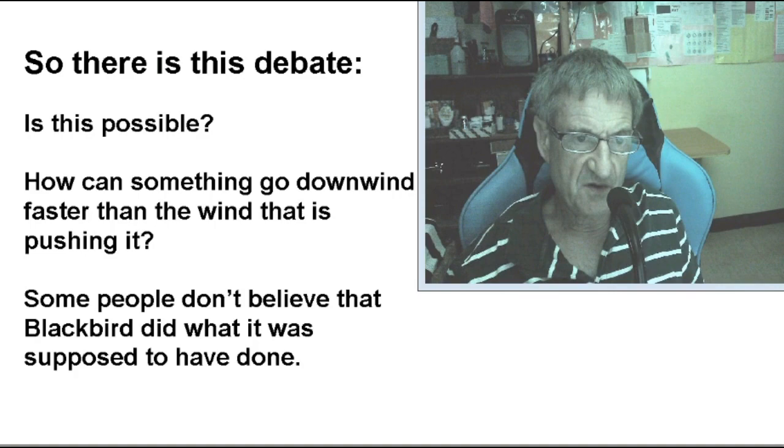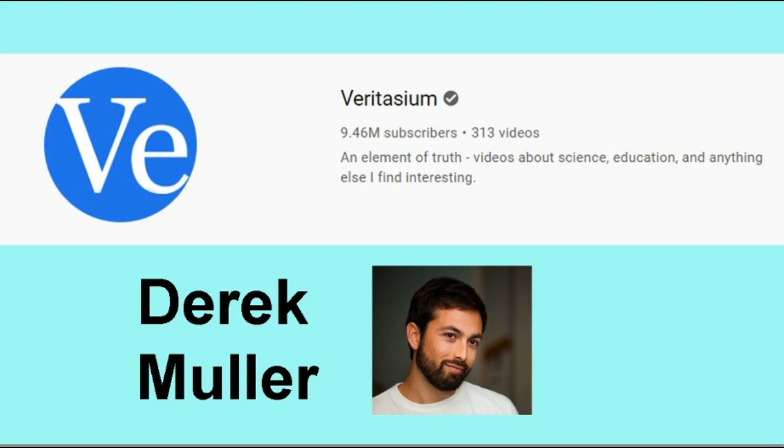So into this debate comes this YouTuber, this famous YouTuber named Veritasium, a.k.a. Derek Muller. He has 9.6 million subscribers. He's rich, he's famous, he has a Ph.D. in physics, he's handsome, he's tall, personable. Basically everything I wish I was, but never mind that. That's not important here.